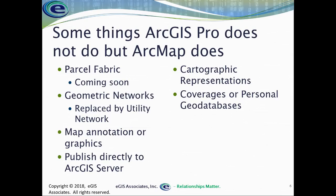If you work in utilities and use the geometric network capability, that's not supported in ArcGIS Pro. It's being replaced by the new utility network model that Esri released earlier this year in beta form. ArcGIS Pro can view data in a geometric network, but it doesn't allow network tracing or data maintenance — you must still use ArcMap for that. At some point you'll want to migrate to the utility network, but I'd give it at least another year before it's ready for full implementation.